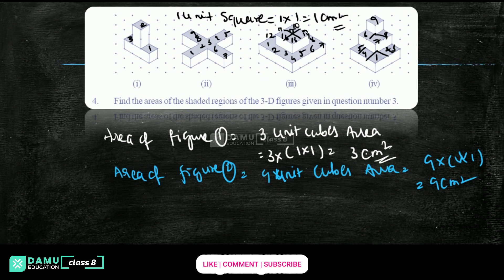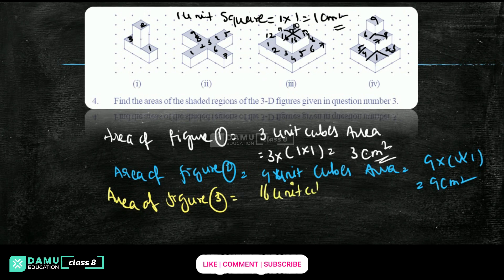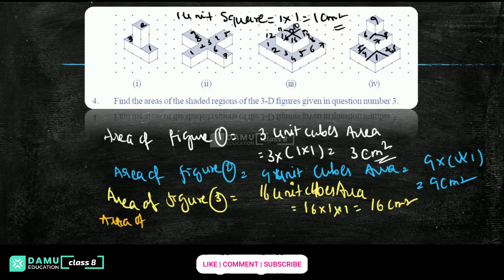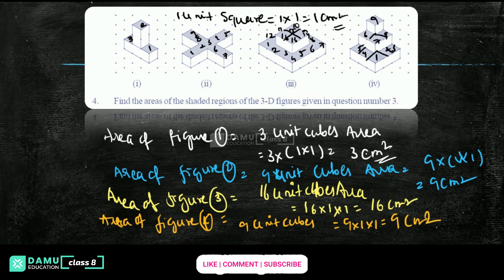Area of figure 3 will be 16 unit cubes — 16 into 1 into 1, that is 16 centimeter square. Area of figure 4: 9 unit cubes — 9 into 1 into 1, that is 9 centimeter square or square units. Thanks for watching. Please subscribe. Bye-bye. Thank you.